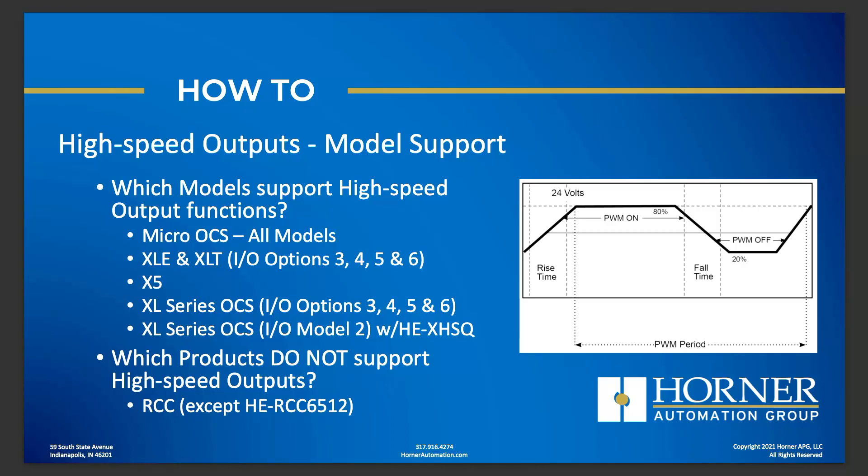For the XLE, XLT, or XL Series from XL4 on up, even if you're using the model 2 relay version, you can add the HE-XHSQ option card to your system, which will add the high-speed output capability. Products that do not support high-speed outputs are primarily the RCC family — although the RCC 6512 does support high-speed outputs, the rest of the RCC line does not.